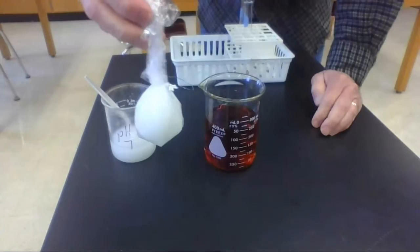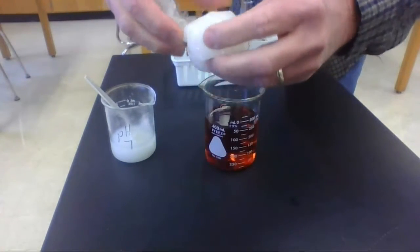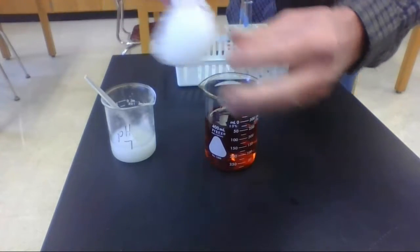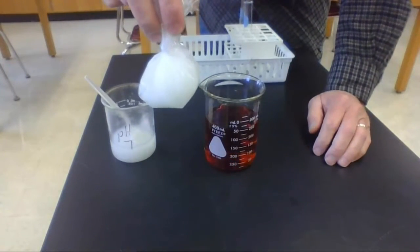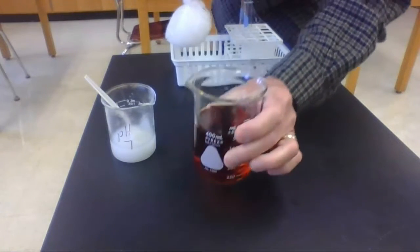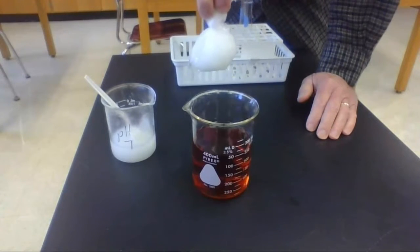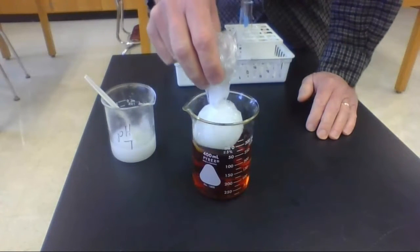So now the baggie, I tied it off so that it doesn't leak, and we've got a starch solution in the baggie. And I'm going to put this model of the cell into a solution here. And if you'll notice, it's got a bit of an orangish color to it, because this is water with iodine added to it.